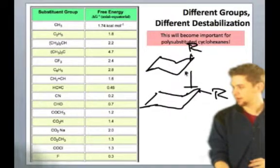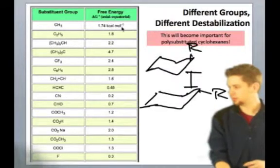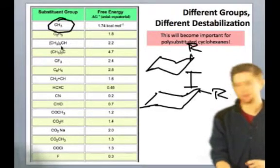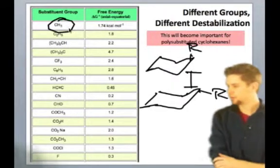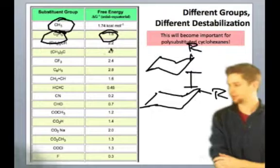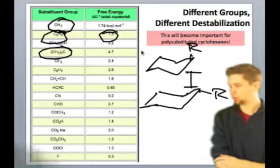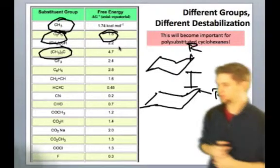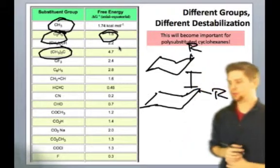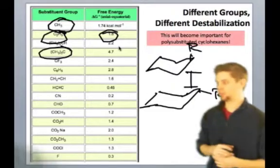We see that the smallest group, CH3, has a value of only 1.74 kilocalories per mole. As we increase it to ethyl, we're only up to 1.8, which is an interesting observation. But when we finally get to tert-butyl, we make a huge jump from 2.2, which is the isopropyl group, to the tert-butyl group at 4.7.